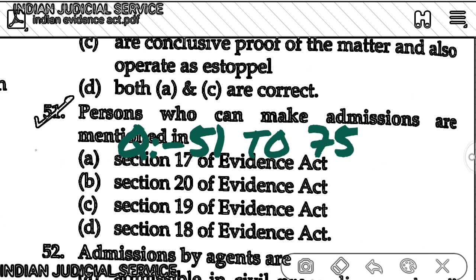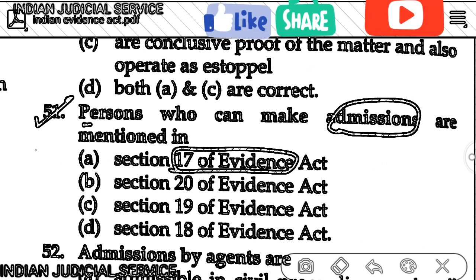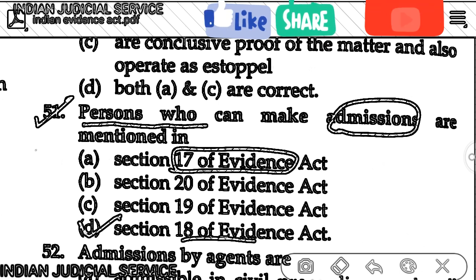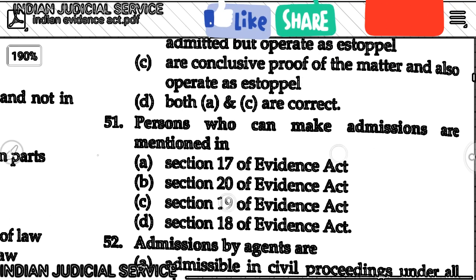Question number 51: The persons who can make admissions are mentioned in which section? Section 17 mentions the definition of admission, but option D is correct — Section 18 mentions the persons who make an admission.